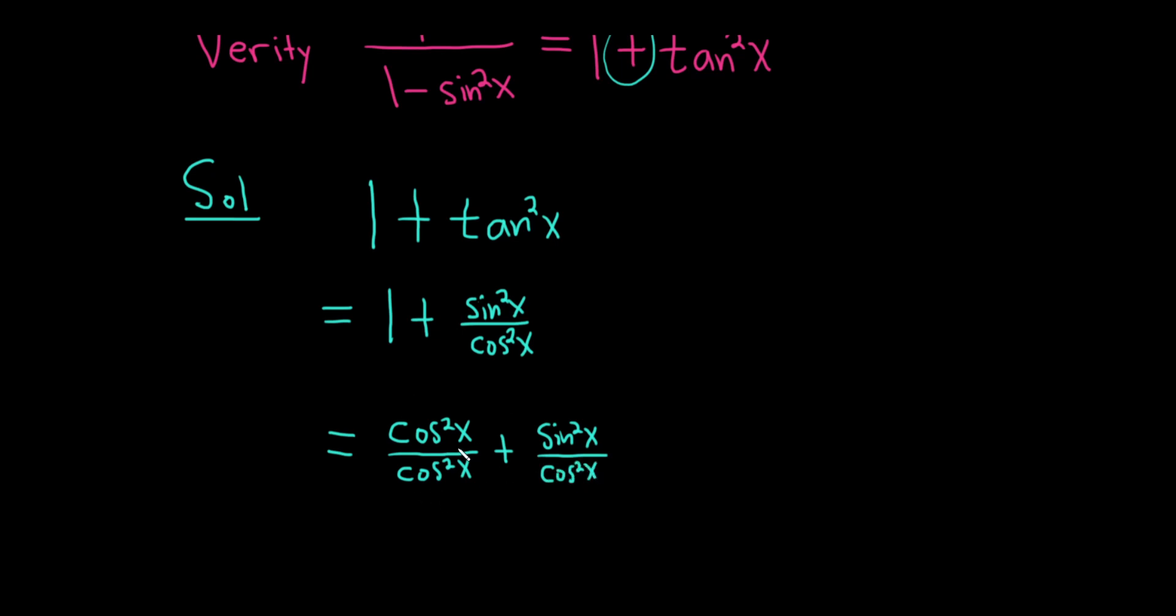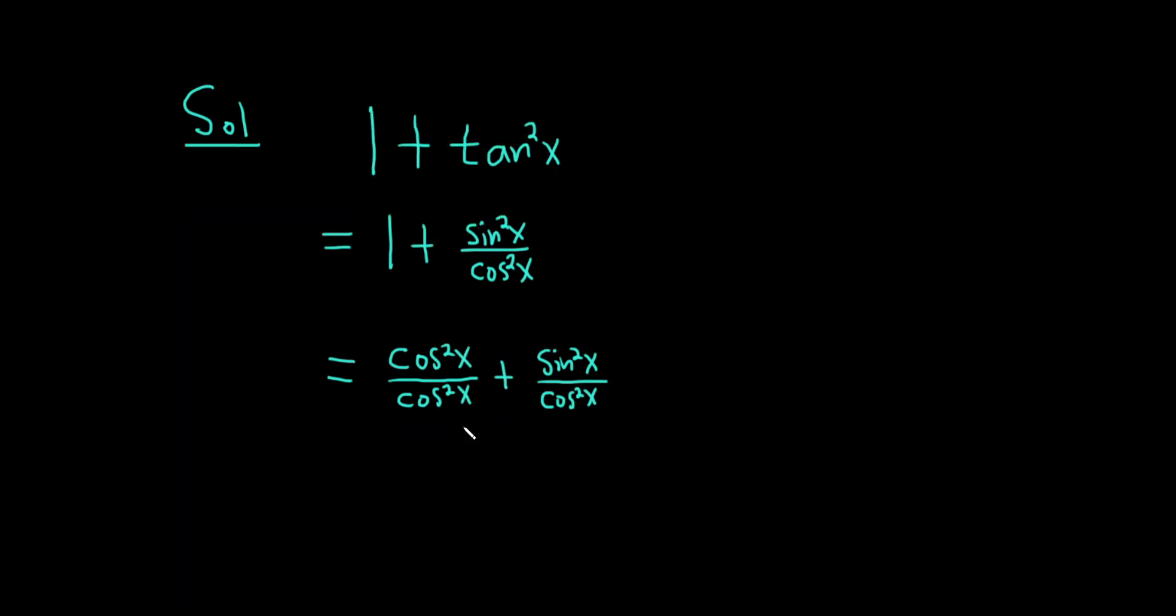That's the same thing as 1. And now we can perform the addition here. So this is equal to cosine squared x plus sine squared x over cosine squared x.